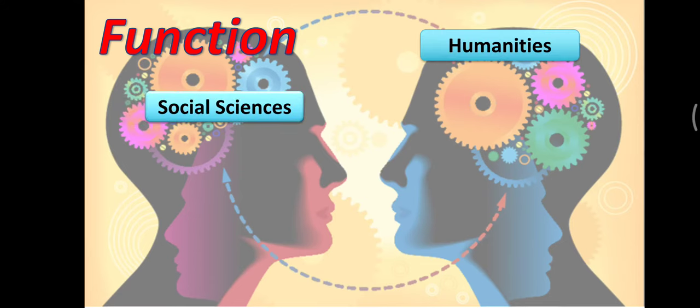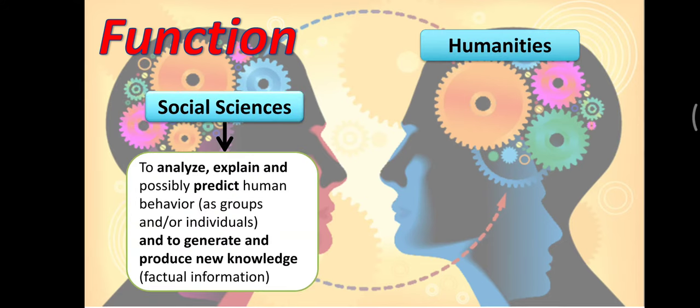The function—in social sciences: to analyze, explain, and possibly predict human behavior as groups or individuals, and to generate and produce new knowledge or factual information. As I mentioned, we follow scientific method and approach. We have hypotheses being tested and we generalize conclusions.